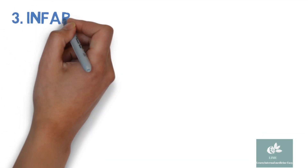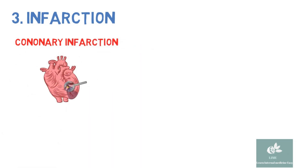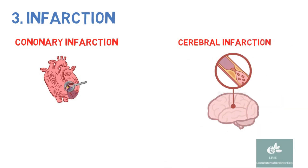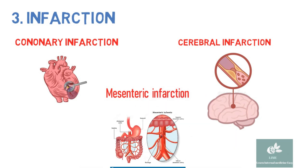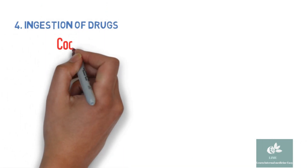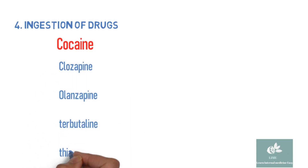Tissue hypoxia can also precipitate DKA, including acute myocardial infarction, cerebral infarction, and mesenteric infarction. Certain drugs can also precipitate DKA — most commonly cocaine. Other drugs include clozapine, olanzapine, terbutaline, and thiazide diuretics. Other precipitating factors include pregnancy, trauma, and surgery.